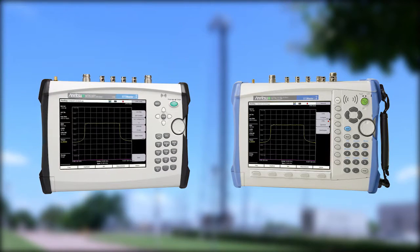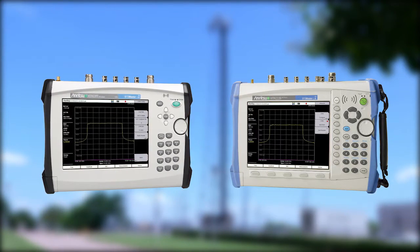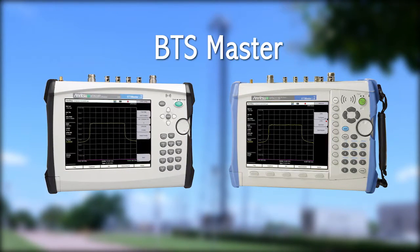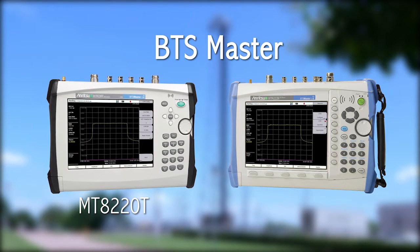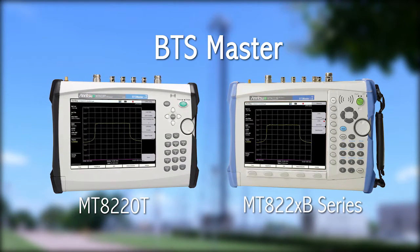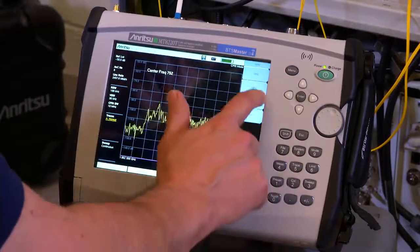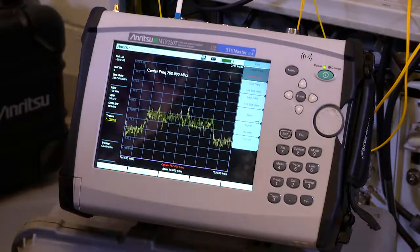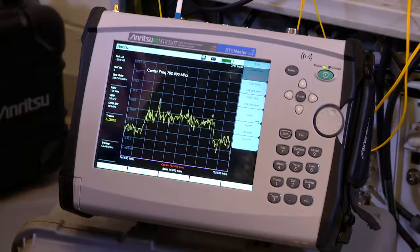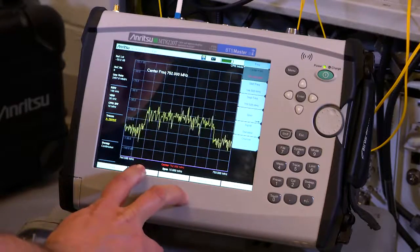This can be achieved with the new CPRI analyzer option on Anritsu's BTS Master models MT8220T and MT8222XB series models. By monitoring the CPRI link at ground level, interference on the uplink can be identified without the need to send a technician to the remote radio head at the top of the tower.